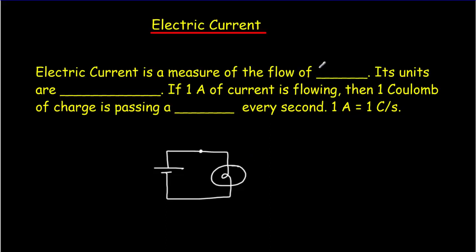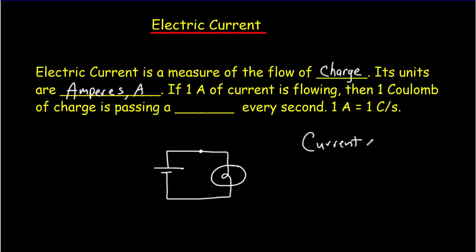Electric current is simply a measure of the flow of charge. Remember that charge is a bit of an abstract concept because it's really a deficit or excess of protons compared to electrons. The units of electric current are the amperes — we use a capital A for the units of current. The symbol for current is the capital letter I.